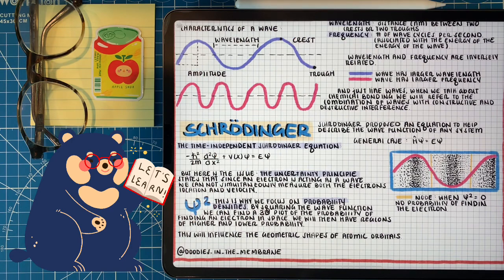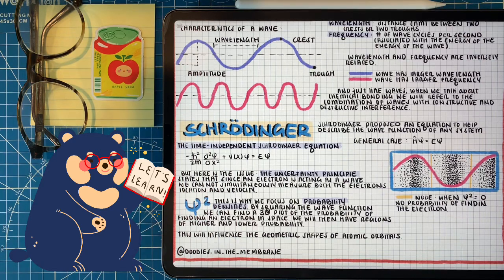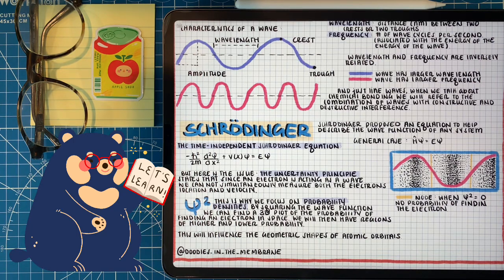Now let's associate what we've learned about waves with atomic orbitals. The scientist Schrödinger created an equation to describe the amplitude of the wave at any given energy level. One of the interesting things is that energy is quantized, meaning there's a limitation to the discrete values that energy can equal. This equation helps us describe the amplitude of the wave at different energy outputs and understand its properties.